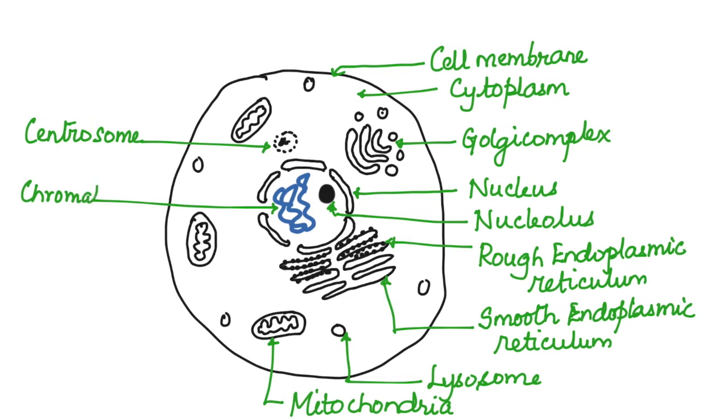Inside the nucleus is the genetic material in the form of chromatin material. This chromatin material then condenses to form chromosomes. There are ribosomes present which are responsible for synthesis of proteins.